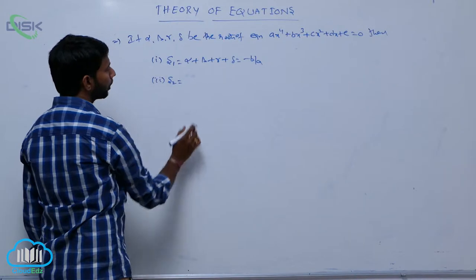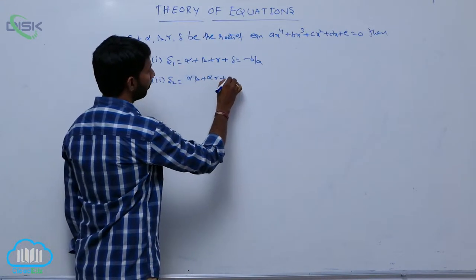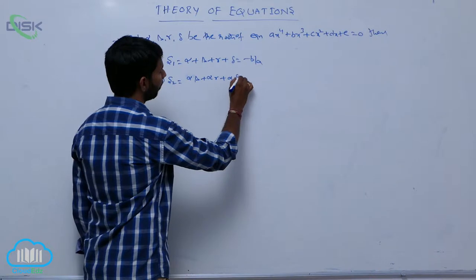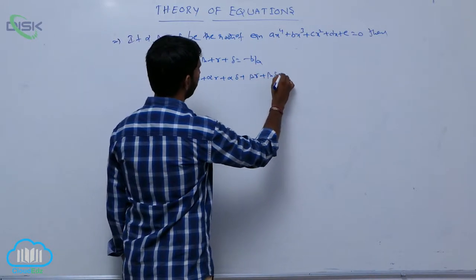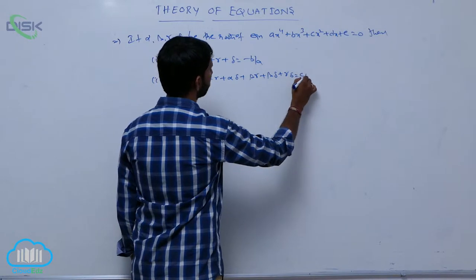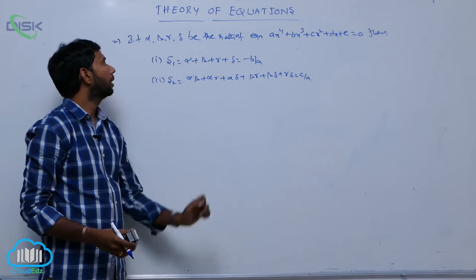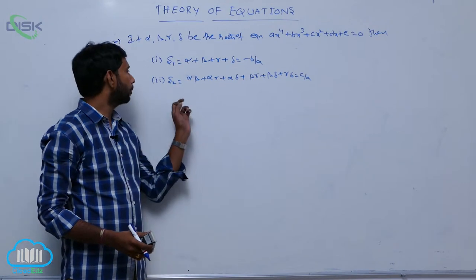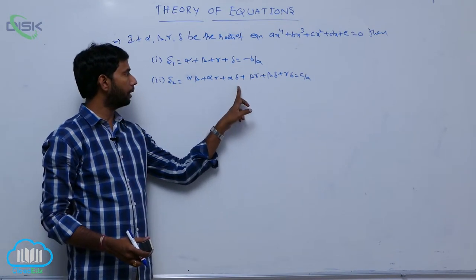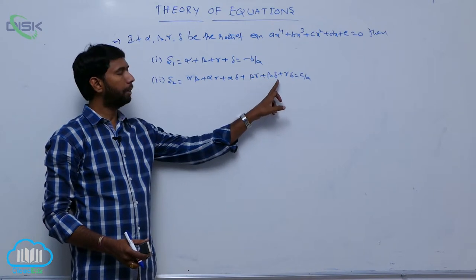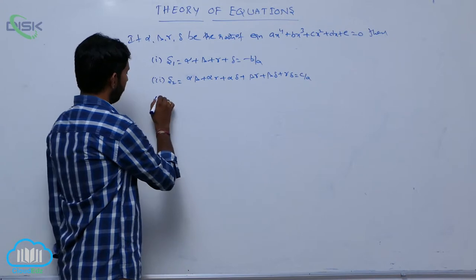S2 is the sum of product of roots taken two at a time. That is alpha·beta + alpha·gamma + alpha·delta + beta·gamma + beta·delta + gamma·delta, which is equal to C by A.